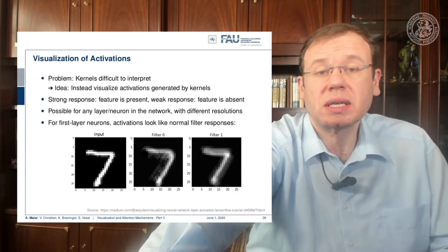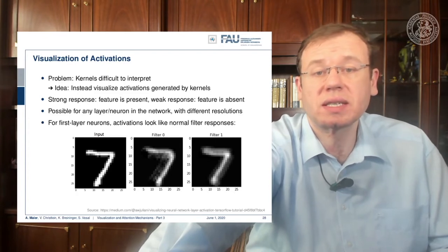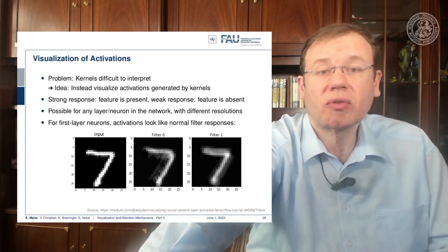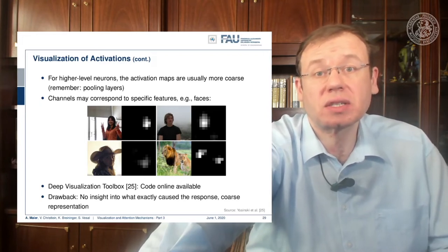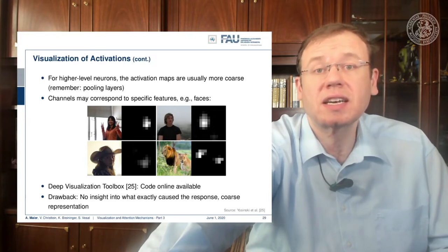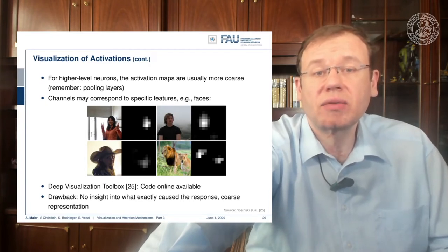For the first layer, the activations look like normal filter responses. You can see the input and then filter zero and filter one — you can see that they somehow filter the image. You can then proceed and look at the activations of deeper layers. You already realize that looking at the activations may be somehow interesting, but the activation maps by the downsampling typically lose resolution very quickly. This means you can then visualize only very coarse activation maps.